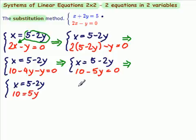So, we have x equals 5 minus 2y. And here we have 10 equals 5y. I hate it when the variable is on the right side. So, I'm going to waste my time and my energy and my pencil and turn that equation around to be 5y equals 10.